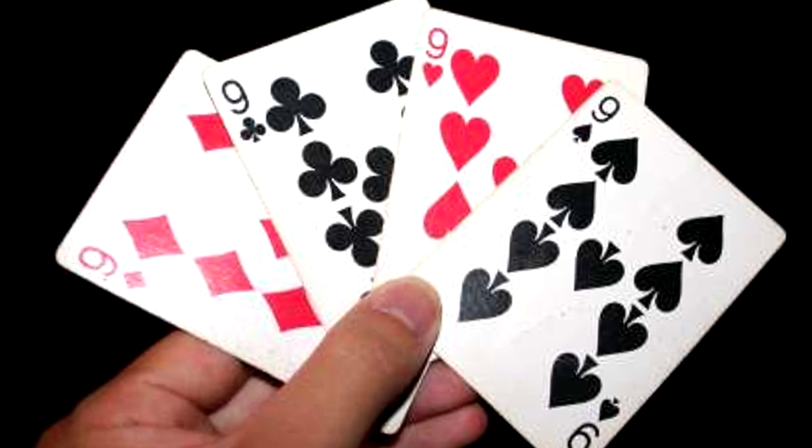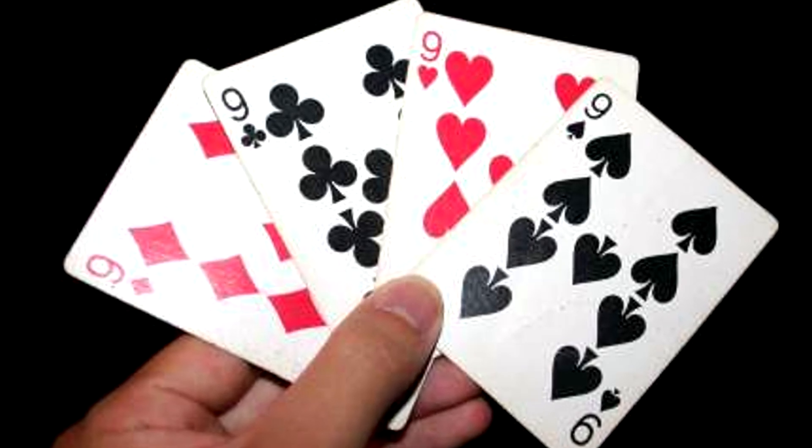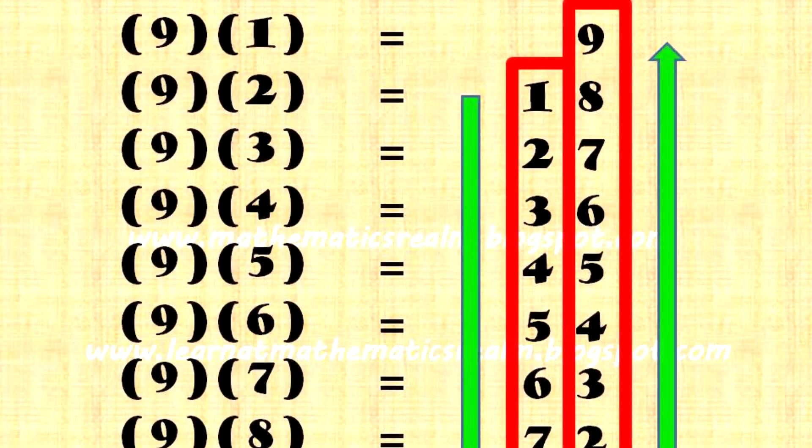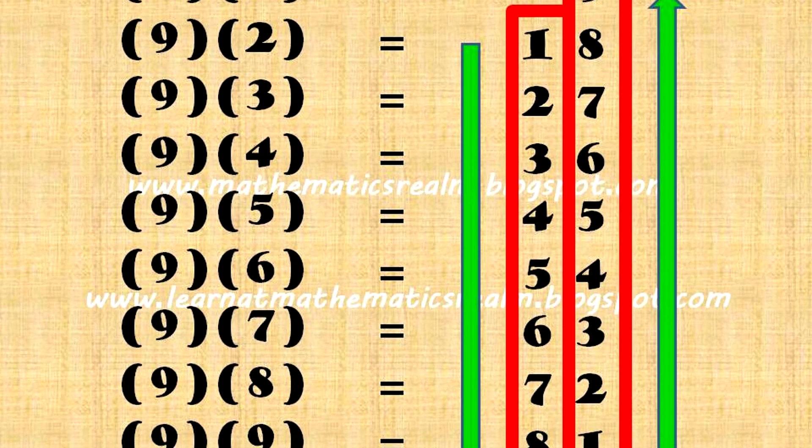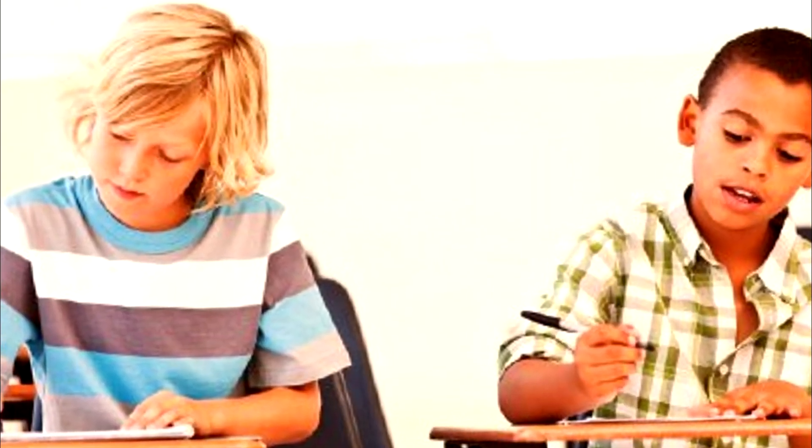Multiples of 9. This is actually crazy simple. Imagine the number 9 as 09 for the purpose of this math hack. As you increase multiples of 9, the first digit will count up from 0 and the second digit will count down from 9. This works all the way until 9 times 10.